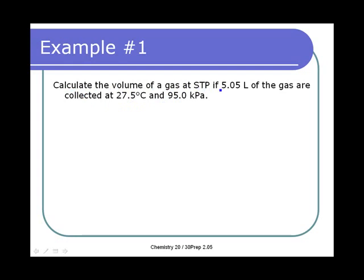We're going to calculate the volume of a gas at STP if 5.05 liters of the gas are collected at 27.5 degrees Celsius and 95 kilopascals. So now we make our list: V1, T1, P1, V2, T2, P2. We want to calculate the volume of a gas at STP, so we want a volume — I'm going to make it my second volume. It really doesn't matter which one you choose.